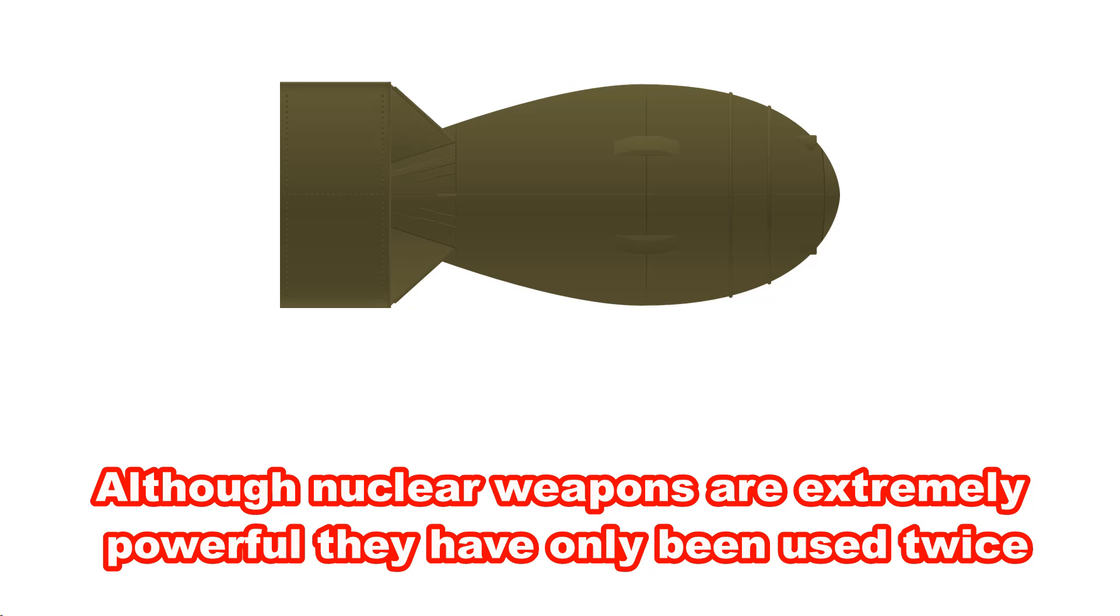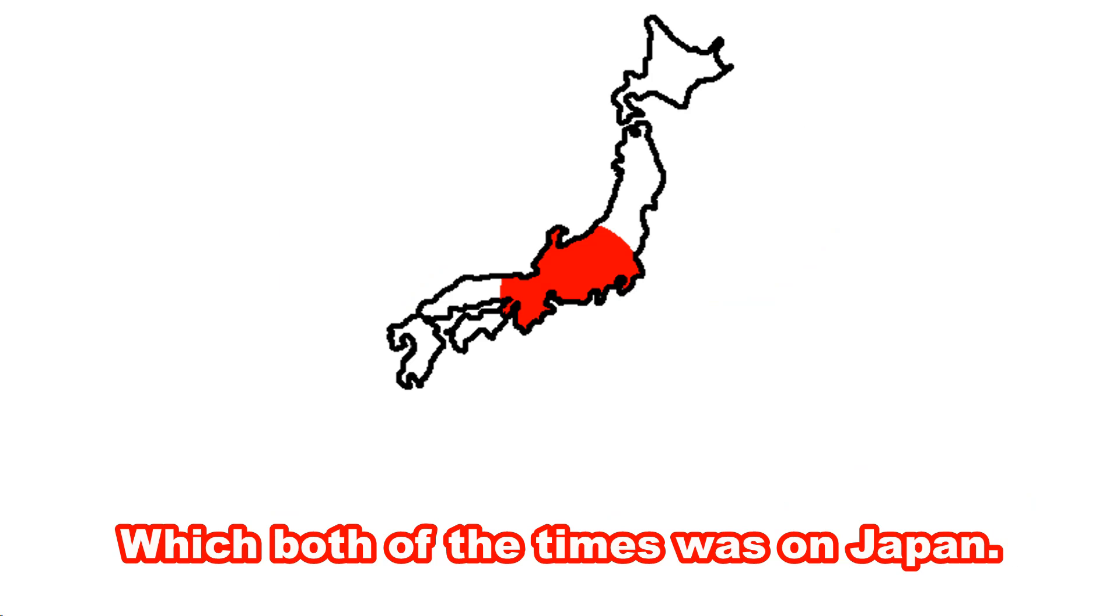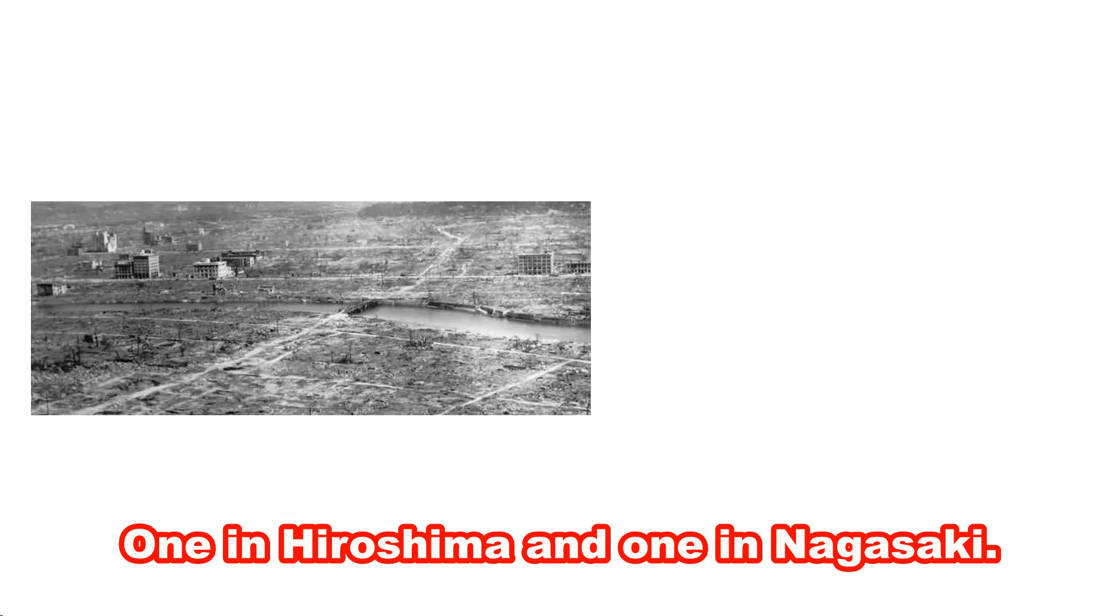Although nuclear weapons are extremely powerful they have only been used twice, both times on Japan. One in Hiroshima and one in Nagasaki.